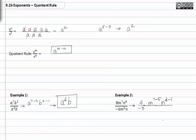And when that's completely simplified we have negative four-thirds m to the second n to the third.